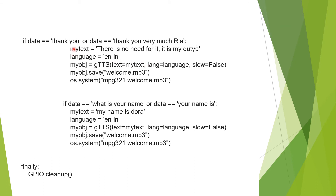When you are done with all these appliances, you can say 'thank you' or 'thank you very much', and the automated Google Text-to-Speech voice will respond automatically. That is how you finally end the program with GPIO cleanup. So this is the code for your Raspberry Pi.